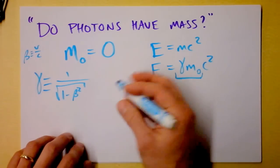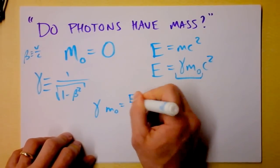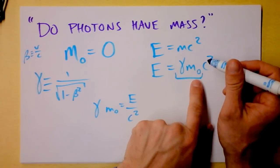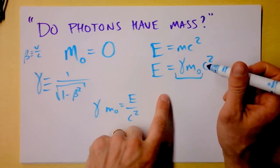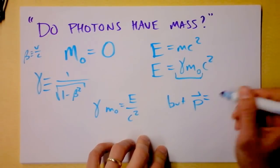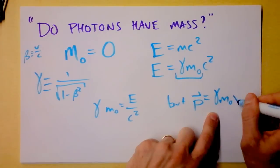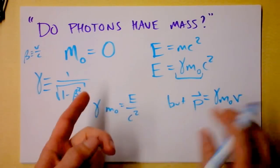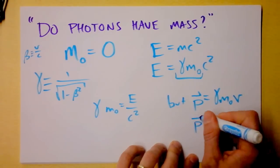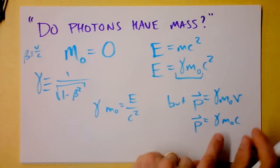I know that I could say that gamma times m-naught is E over C squared, just solving this equation right here for gamma m-naught, E over C squared. But I also know that momentum, the momentum in relativity, is gamma times m-naught times V. And in our case, we know the velocity of a photon is going to be C. So I've got gamma times m-naught times C.